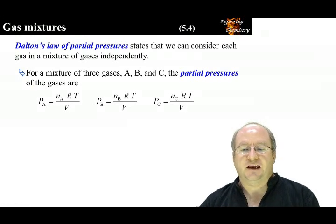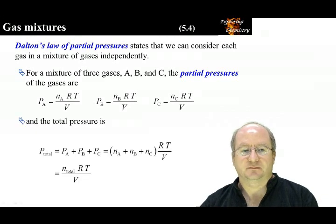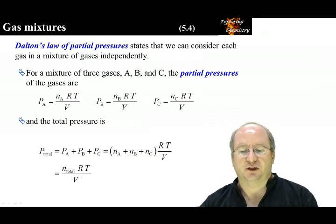Dalton's Law of Partial Pressures states that the properties of individual gases in a mixture are proportional to their fraction in the gas, which gives the partial pressure of each gas. For a mixture of gases, the partial pressure of each gas obeys the ideal gas law, but with the number of moles of each gas. The total pressure is the sum of the partial pressures.